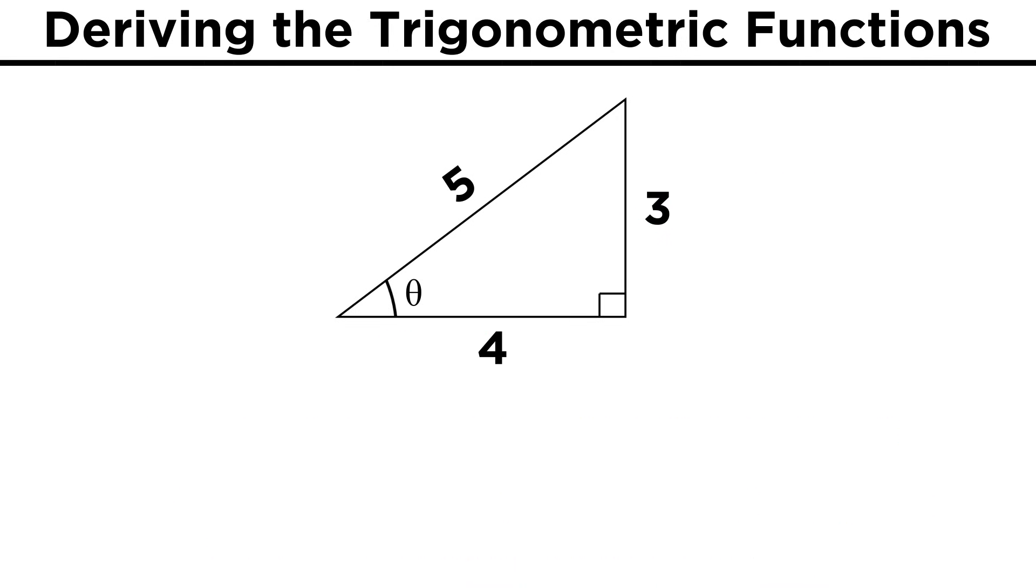Looking at this triangle with sides of length three, four, and five, sine of theta must be three over five, cosine theta is four over five, and tangent theta is three over four.